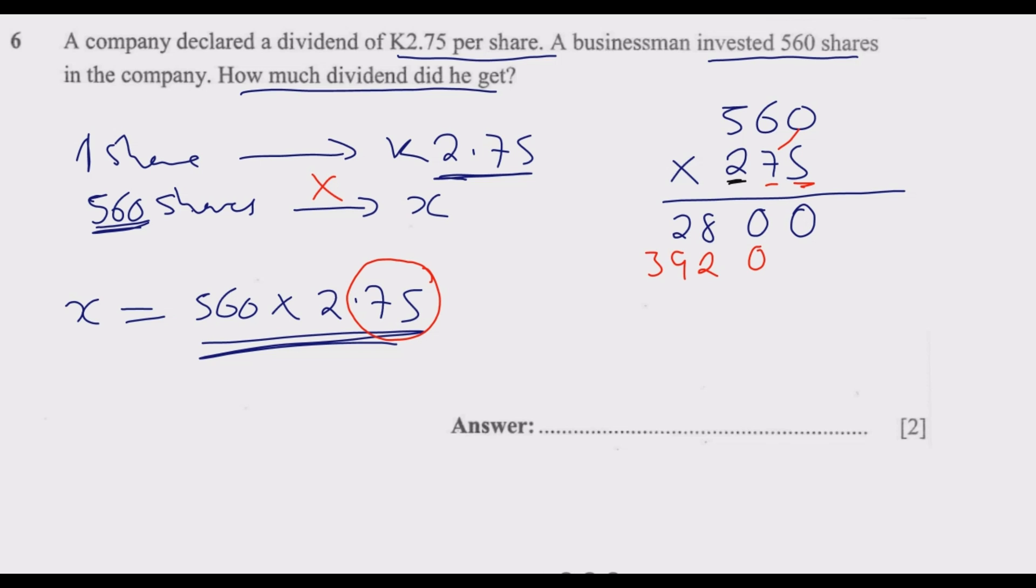Then we go to the last one, which is in this case 2. Then 2 times 0, we are going to have 0 in this line. Then 2 times 6 will be 12. We carry 1. Then 2 times 5 is 10 plus 1 is going to be 11.